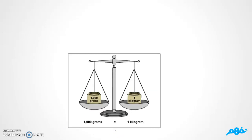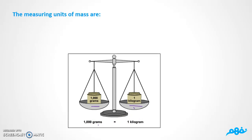We have a balance with two units: grams and kilograms. You've studied these units before, and you know that one kilogram is equal to 1,000 grams. The measuring units of mass are gram and kilogram, so we use gram and kilogram to measure mass.